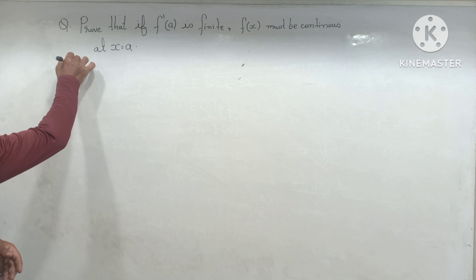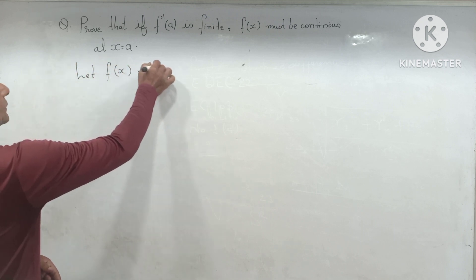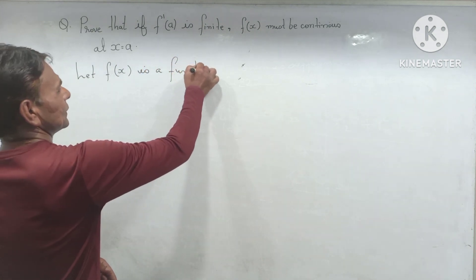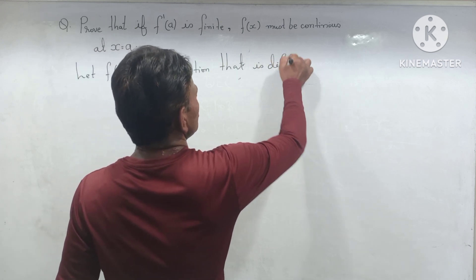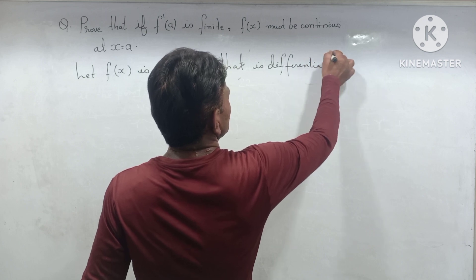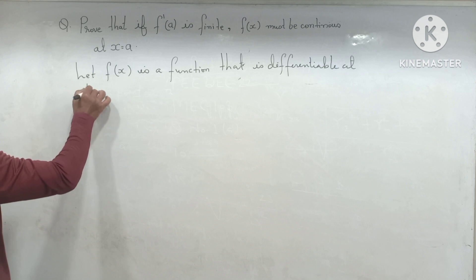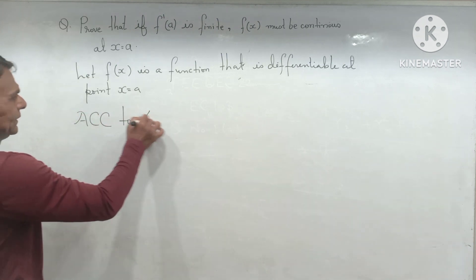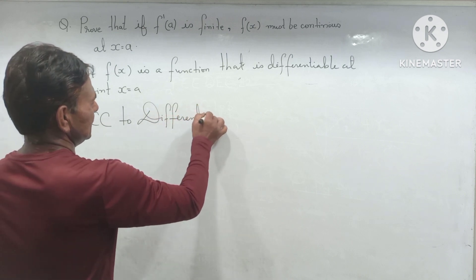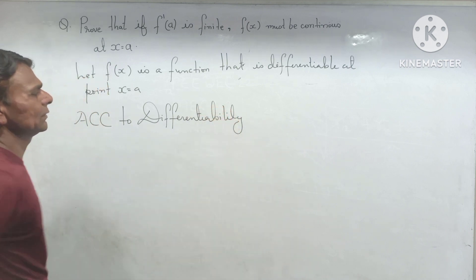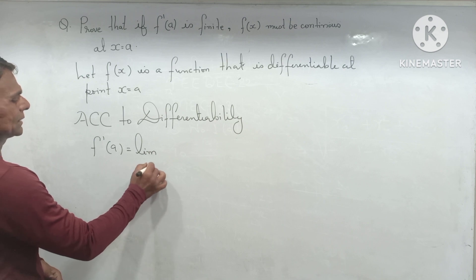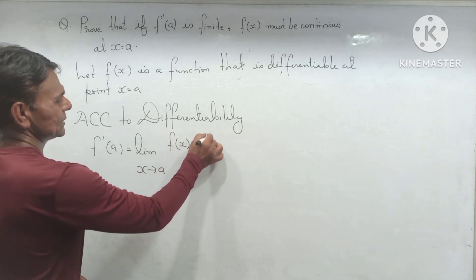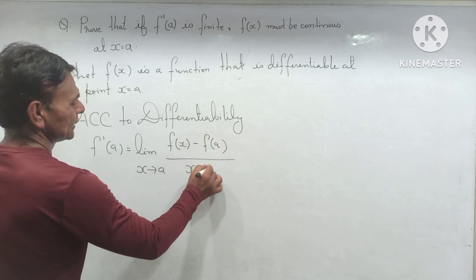So let's see the solution procedure. First, let f(x) is a function that is differentiable at point x equal to a. According to differentiability, the formula is f dash a equal to limit as x tend to a, f(x) minus f(a) divided by x minus a.